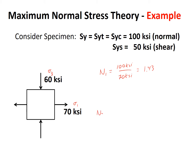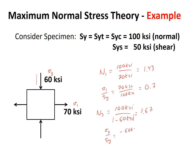Looking at principal stress 3, we have a yield stress of 100 ksi and a compressive stress of minus 60 ksi, giving a factor of safety of 1.67. Looking at the ratios: sigma 1 over sigma y is 70 ksi divided by 100 ksi, a ratio of 0.7. And for principal stress 3, minus 60 ksi over 100 ksi gives a ratio of minus 0.6.